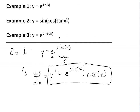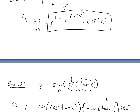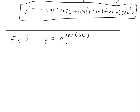Now the last example: y equals e to the secant of 3 theta, where theta is the Greek symbol used for angles — same as x, just a different variable. Our outer function is e, the first inner function is secant of 3 theta, and 3 theta is an inner of the inner. So we apply the chain rule twice. The derivative dy/d theta equals e to the secant of 3 theta, multiplied by the derivative of secant of 3 theta, which is secant 3 theta times tan 3 theta, and then multiplied by the derivative of 3 theta, which is just 3. So we put the 3 in front.